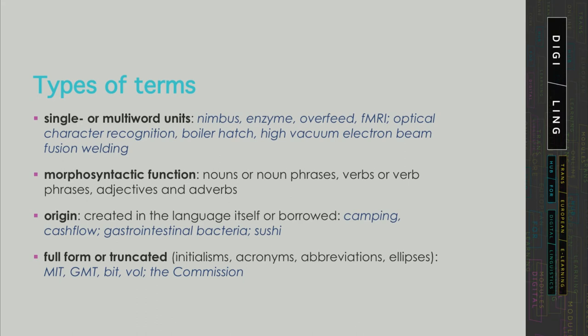We can also distinguish between the full forms of terms — also called canonical forms — and their abbreviated or truncated versions, such as initialisms, acronyms, abbreviations, ellipses, and so on.